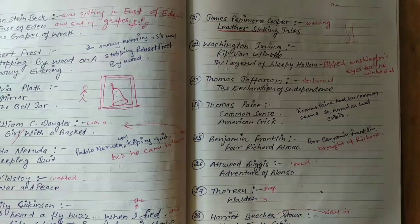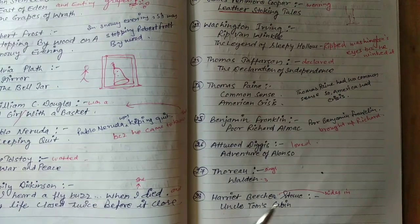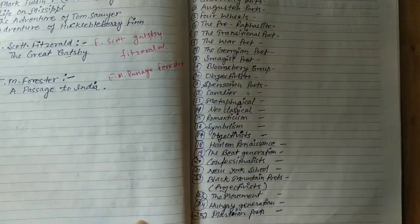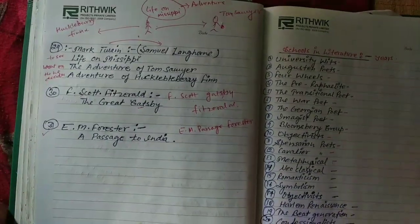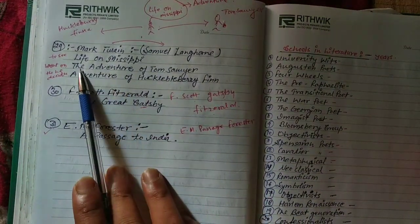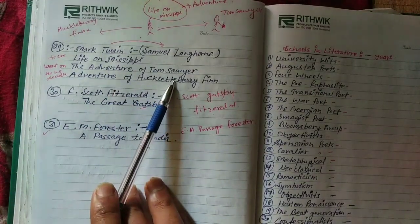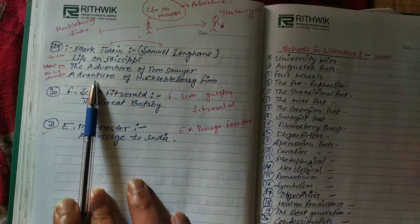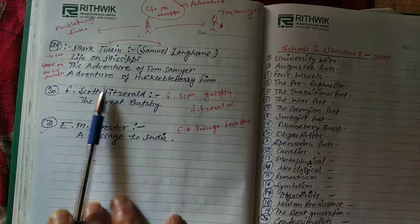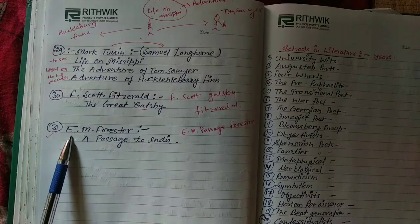Thoreau: Walden. Harriet Beecher Stowe: Uncle Tom's Cabin. Now a few remaining — Mark Twain, also known as Samuel Langhorne Clemens: Life on the Mississippi, The Adventures of Tom Sawyer, and Adventures of Huckleberry Finn. F. Scott Fitzgerald: The Great Gatsby.